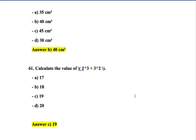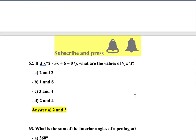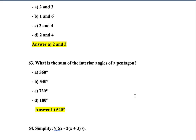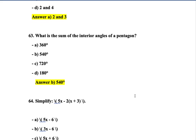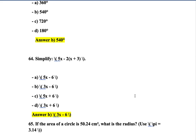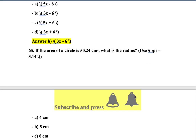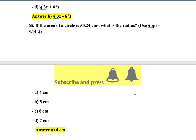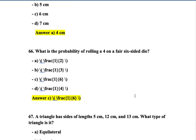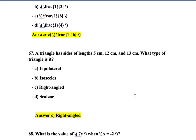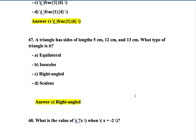Question 61: Calculate the value — the correct answer is 19. Question 62: If x² - 5x + 6 = 0, find the values of x — they are 2 and 3. Question 63: What is the sum of interior angles of a pentagon? It is 540°. Question 64: Simplify — the correct answer is option B. Question 65: If the area of a circle is 50.24 cm², what is the radius (using π = 3.14)? It is 4 cm — option A. Question 66: What is the probability of rolling a 4 on a fair 6-sided die? Option C.